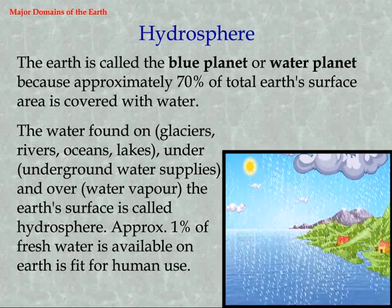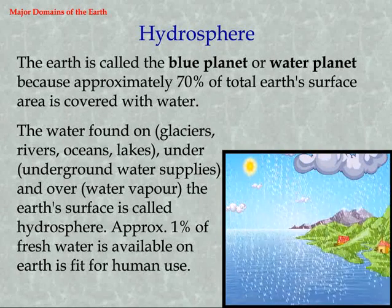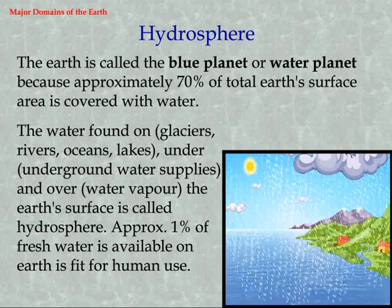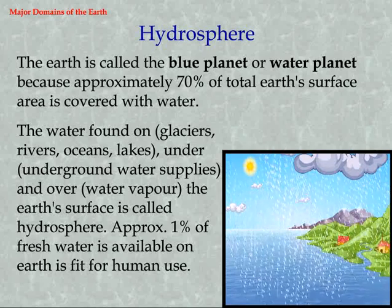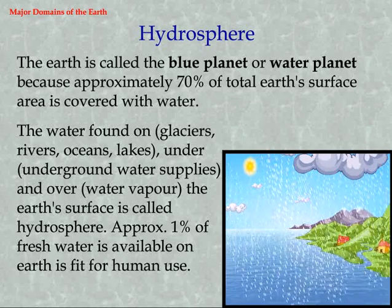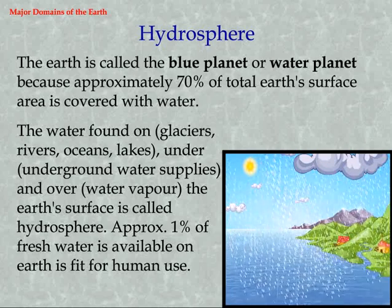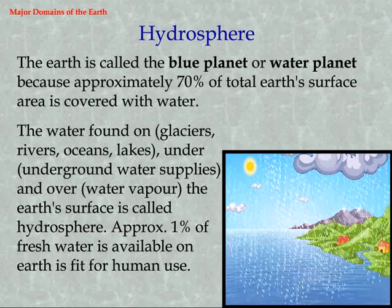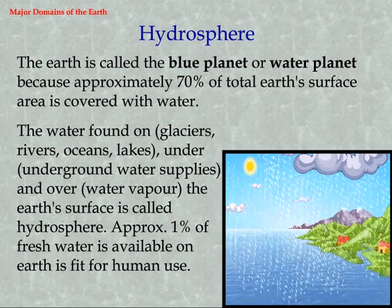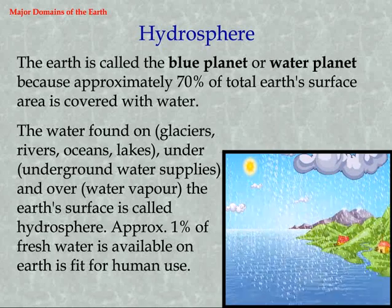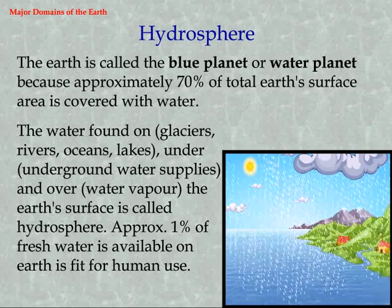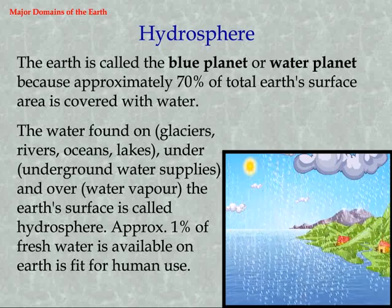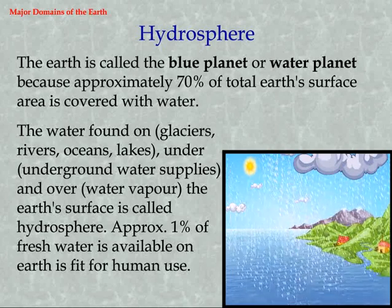Hydrosphere. The Earth is called the Blue Planet or Water Planet because approximately 70% of the total Earth's surface area is covered with water. The water found on glaciers, rivers, oceans, lakes, underground water supplies, and water vapor over the Earth's surface is called the hydrosphere. Approximately 1% of fresh water available on Earth is fit for human use.